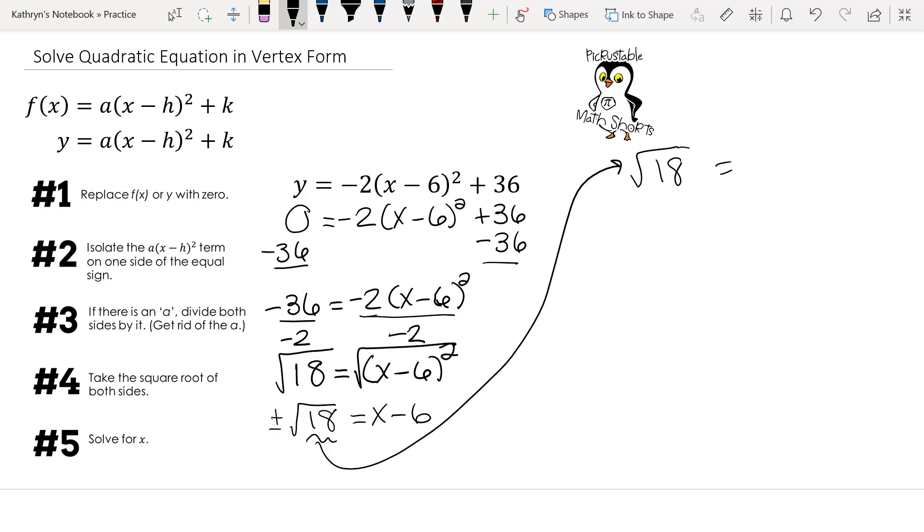I can start dividing by my perfect squares. 18 divided by 4, well, that's a decimal. 18 divided by 9 is 2. So we're going to break this up into the square root of 9 times the square root of 2. Well, the square root of 9 is 3, and we have the square root of 2.